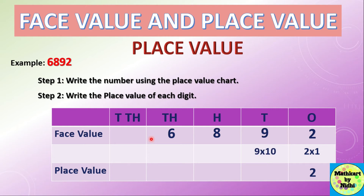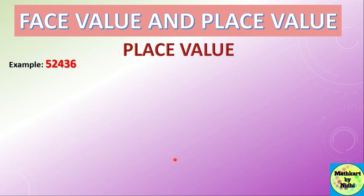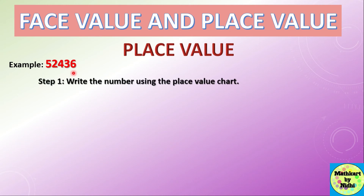The face value of 9 is 9 and it is at tens place, so 9 × 10 = 90. The face value of 8 is 8 and it is at hundreds place, so 8 × 100 = 800. The face value of 6 is 6 and it is at thousands place, so 6 × 1000 = 6000.